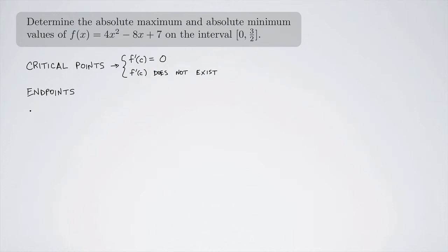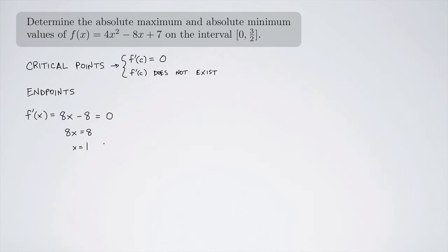Let's calculate the derivative. We have f'(x) = 8x - 8, and we set that equal to 0. That means 8x must equal 8, so x must be 1. That's our critical point: x = 1.